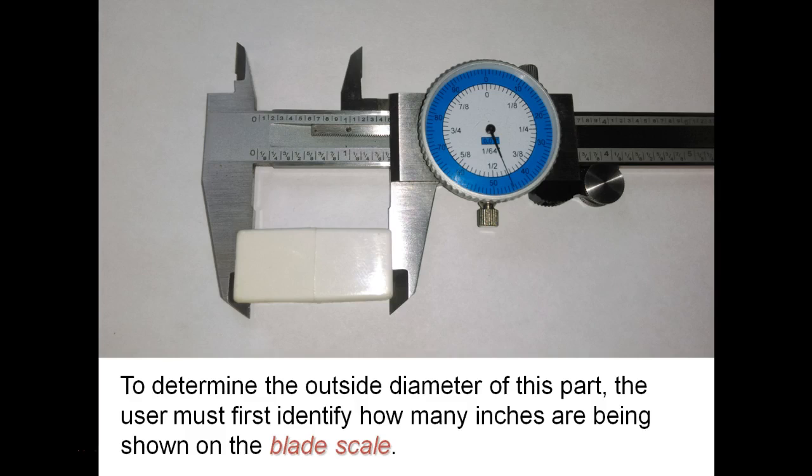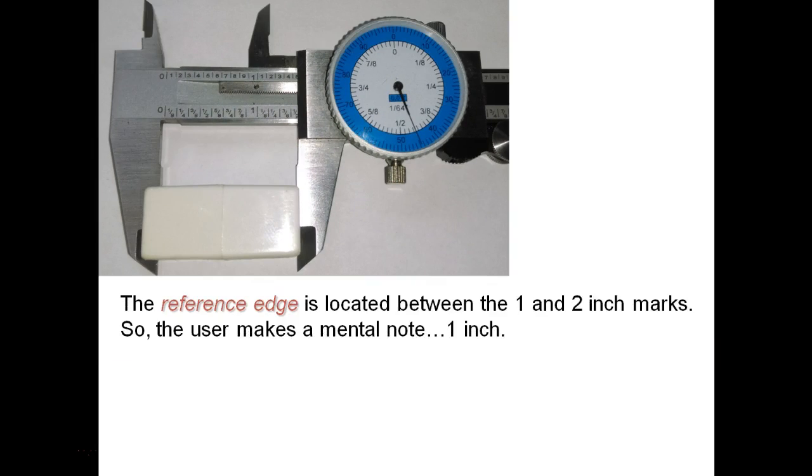Now to determine the outside diameter of this part, we must first identify how many inches are being shown on this blade scale. And when you do this, look at this part, you'll see that our reference edge right along here, it's between the one and two mark. Here's our one inch right here, the large one, but you see the two is going to be somewhere over here and it's not showing. So I go back to this point here and I know it's going to be at least one. So mental note of that, it's at least it's going to be a whole number is going to be one. That's the first thing you want to track. And in reality, that's the only thing you really need to look at on the rack itself is to see what whole number is showing. So in the case here, I have my one.